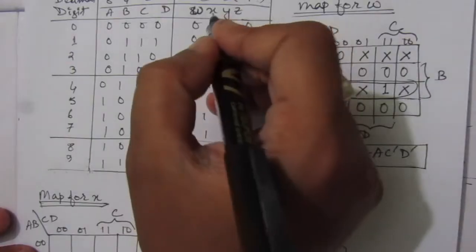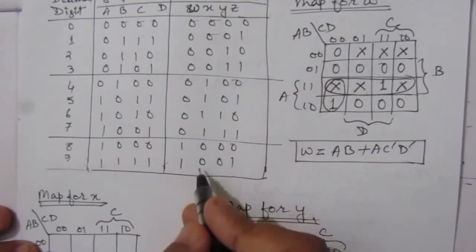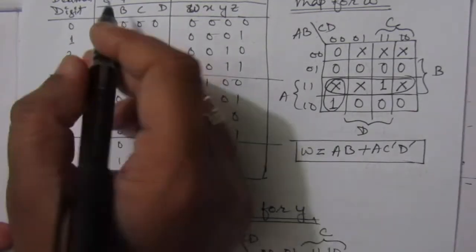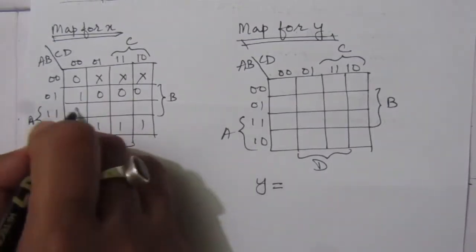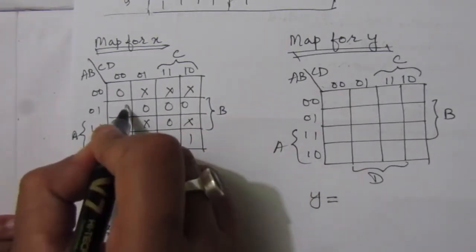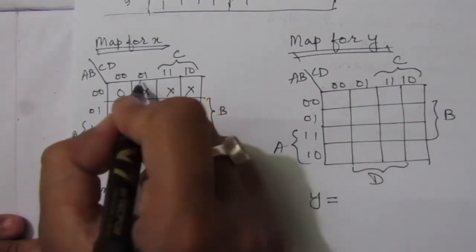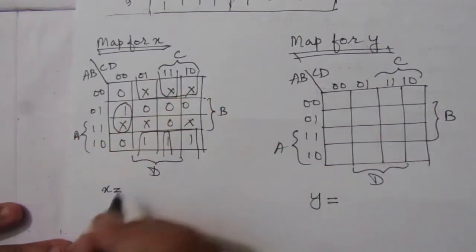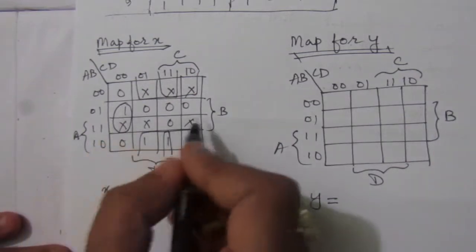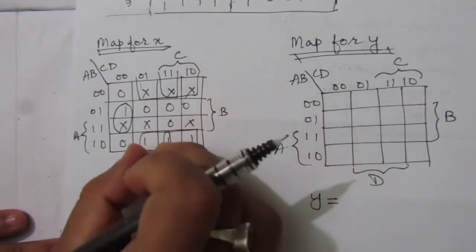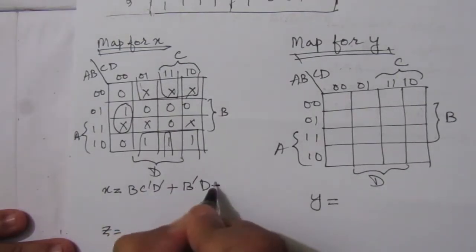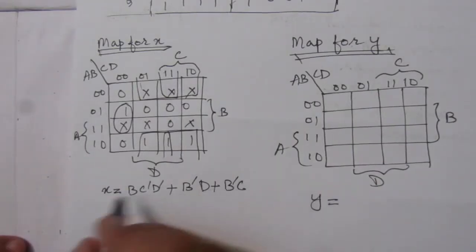For the K-map for X, we put the values from the second output column following the same procedure. After filling the map, we can identify three terms. The first term gives BC̄D̄, the second term gives B̄D, and the third term gives B̄C. So the expression for X is: X = BC̄D̄ + B̄D + B̄C.